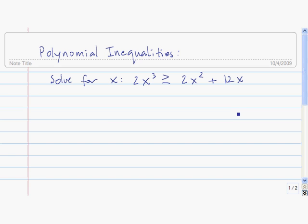The first thing to do when solving a polynomial inequality is to get zero on one side. So here we need to subtract 2x² and 12x from both sides.